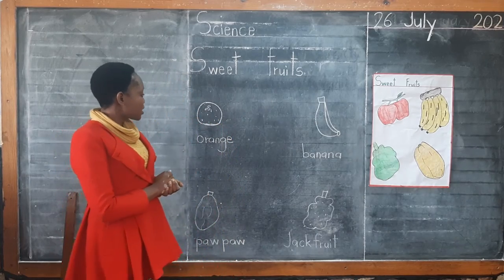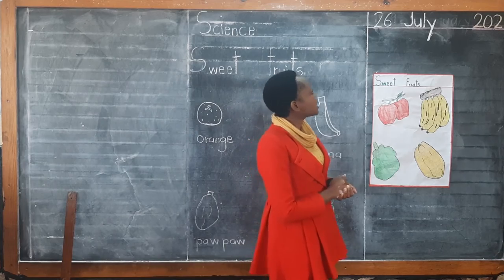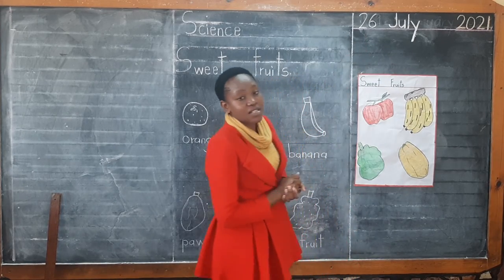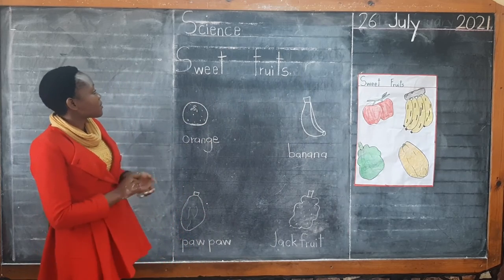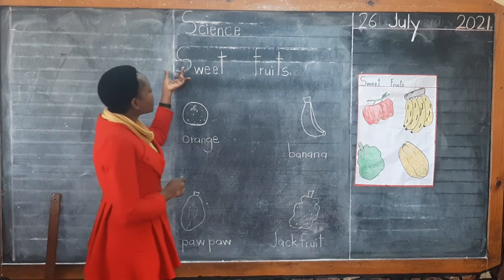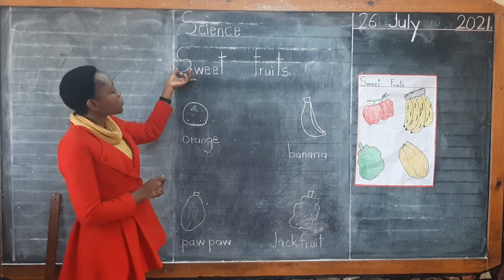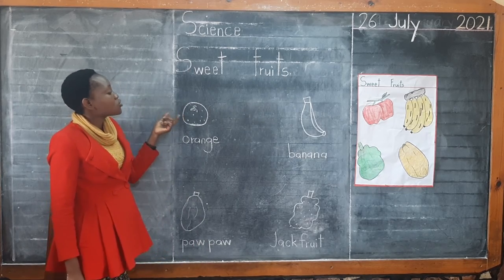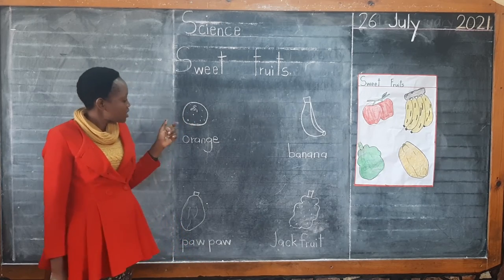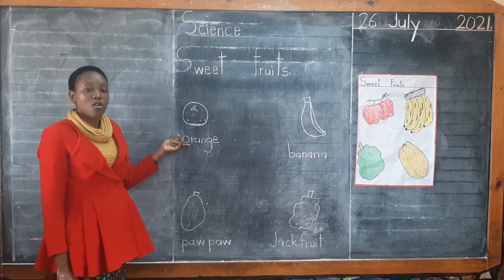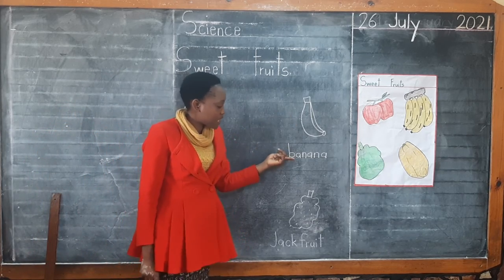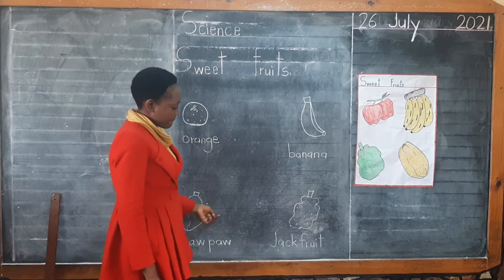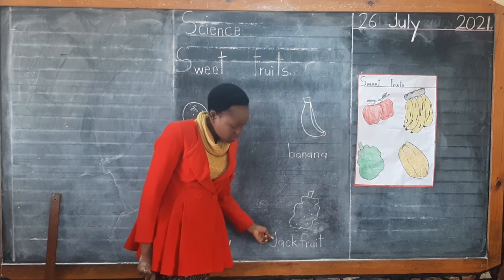So now what we are going to do is write our date. The date is 26th July 2021. After writing the date, you write your name. After writing your name, you write the title — our title is 'Sweet Fruits'. After writing the title, you come here, you draw the fruits nicely. You draw the orange and write 'orange'. You draw the banana and write 'banana'. You draw the popo and write 'popo'. Here you are going to draw the jackfruit and write 'jackfruit'.